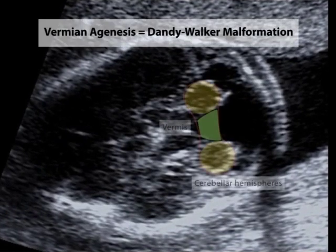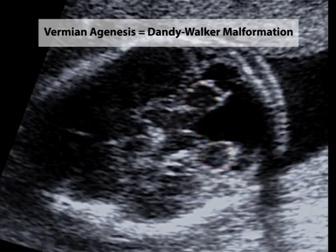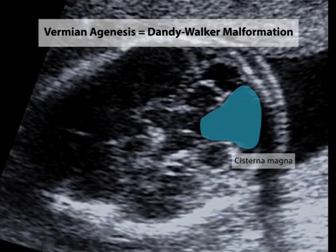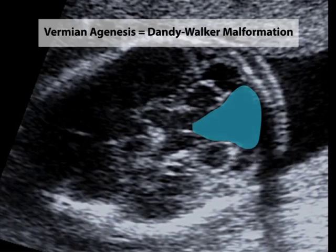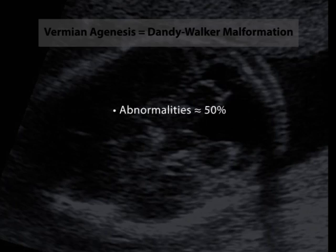Certain abnormalities involving the posterior fossa are identified in the transcerebellar view. The Dandy-Walker malformation is characterized by agenesis of the cerebellar vermis. Sonographically, the absence of the vermis and separation of the cerebellar hemispheres permits fluid in the enlarged cisterna magna to communicate with the 4th ventricle. Vermian agenesis is associated with other abnormalities in approximately 50% of cases and aneuploidy in 40%.